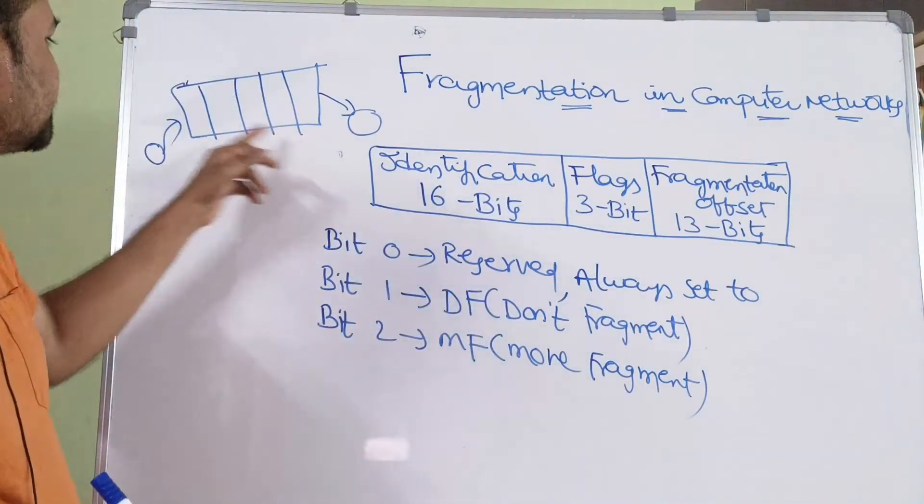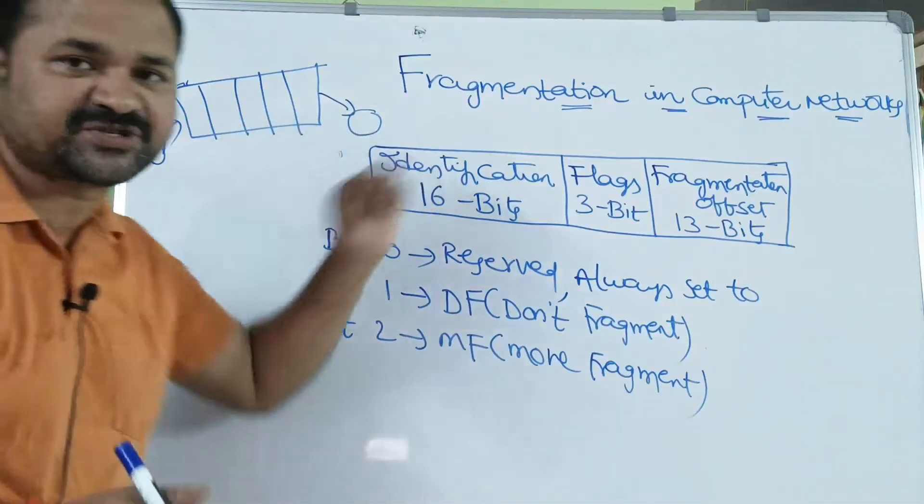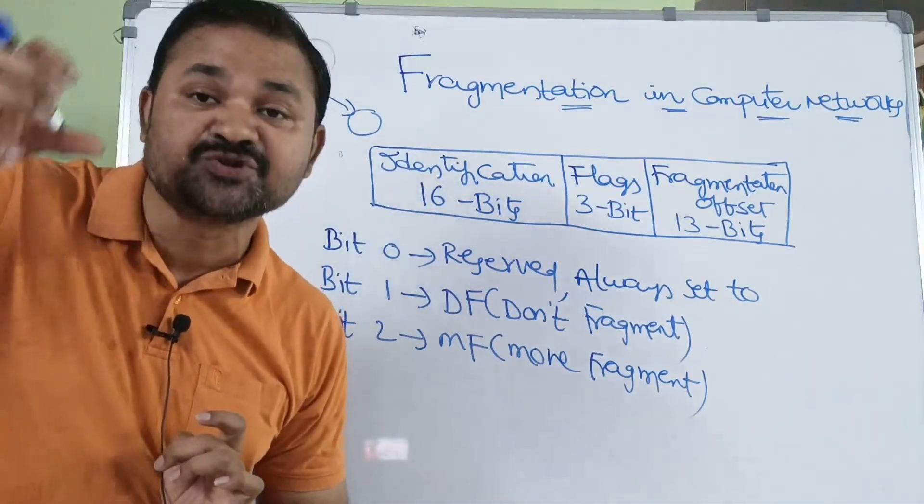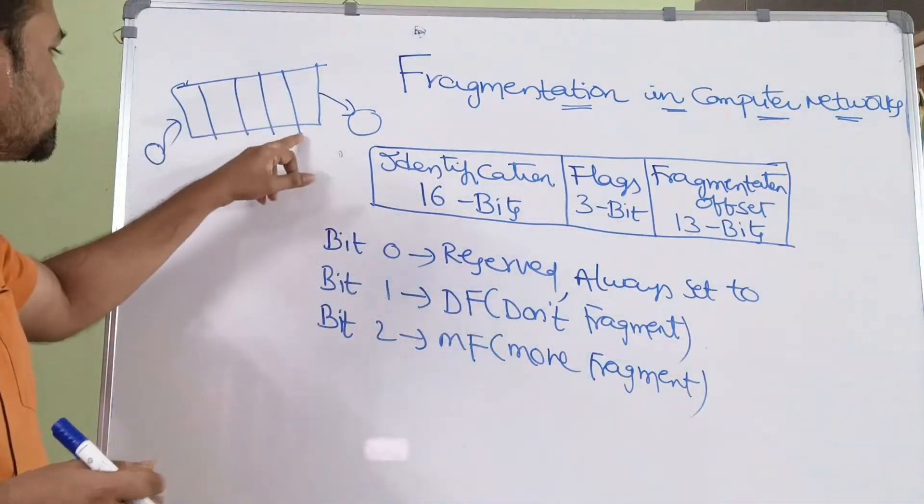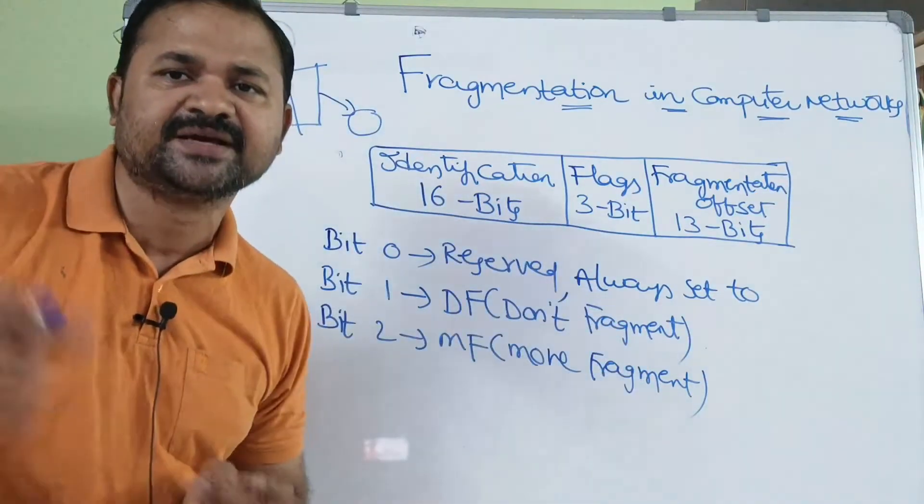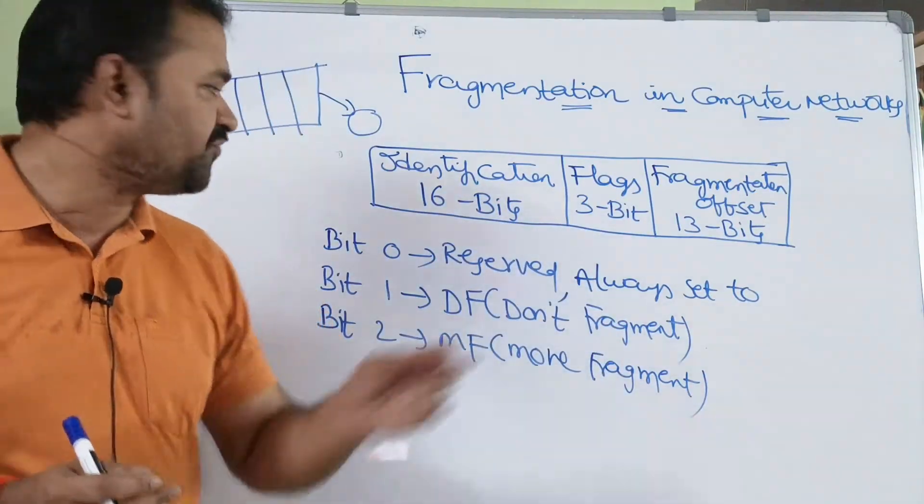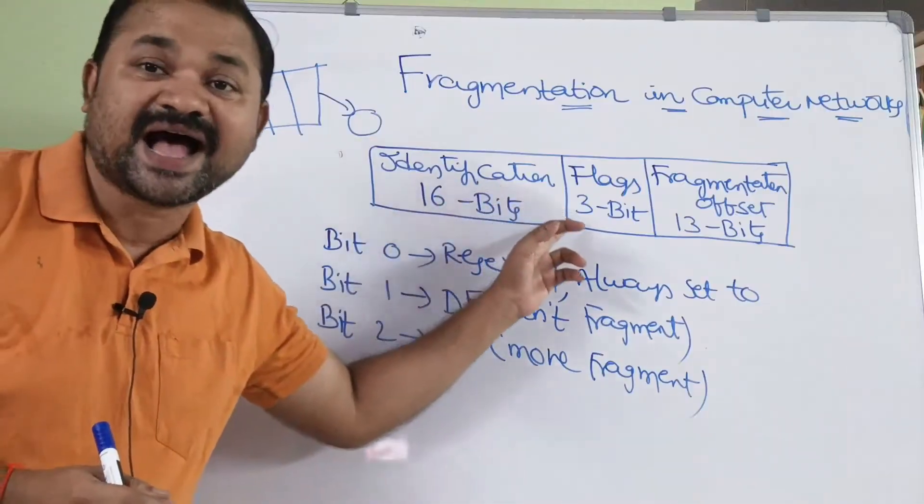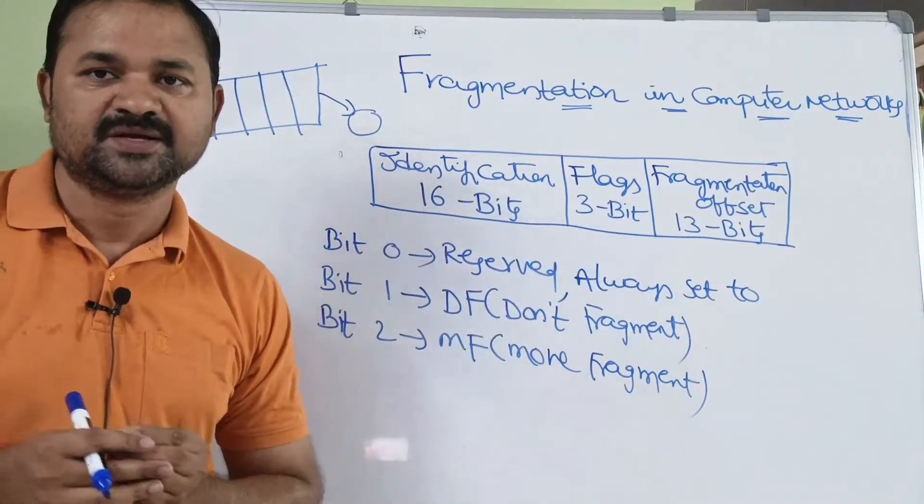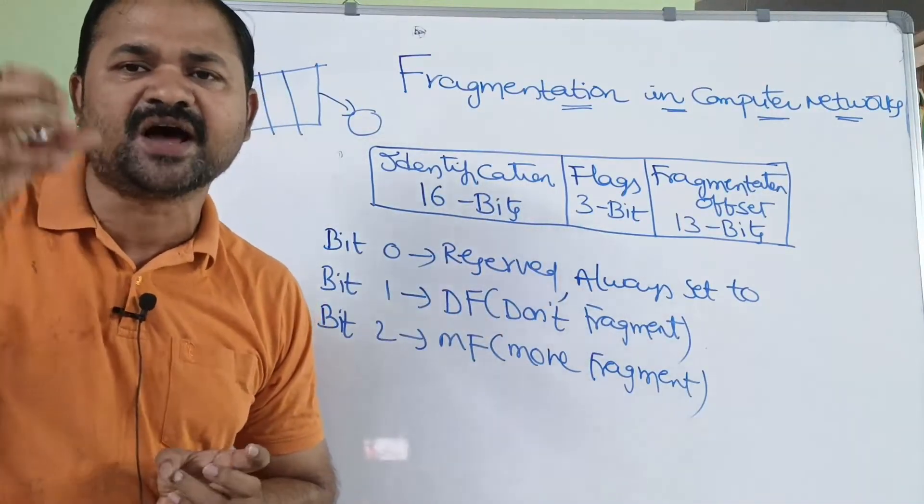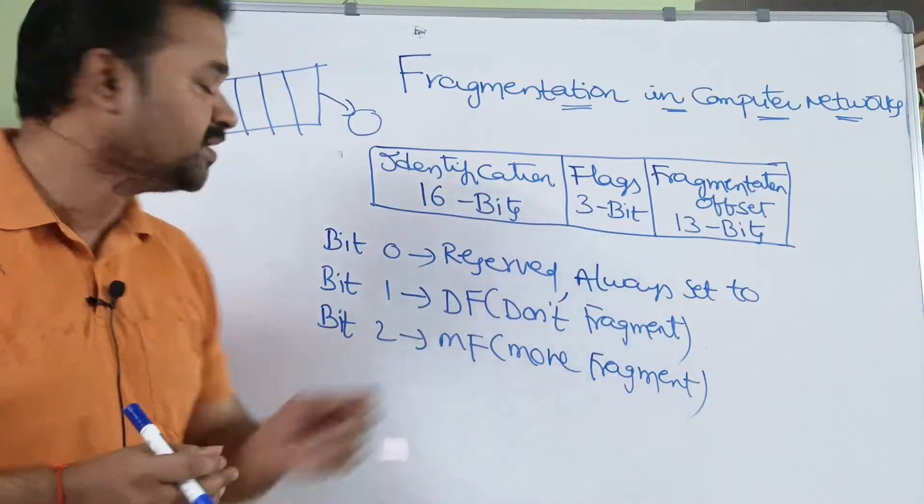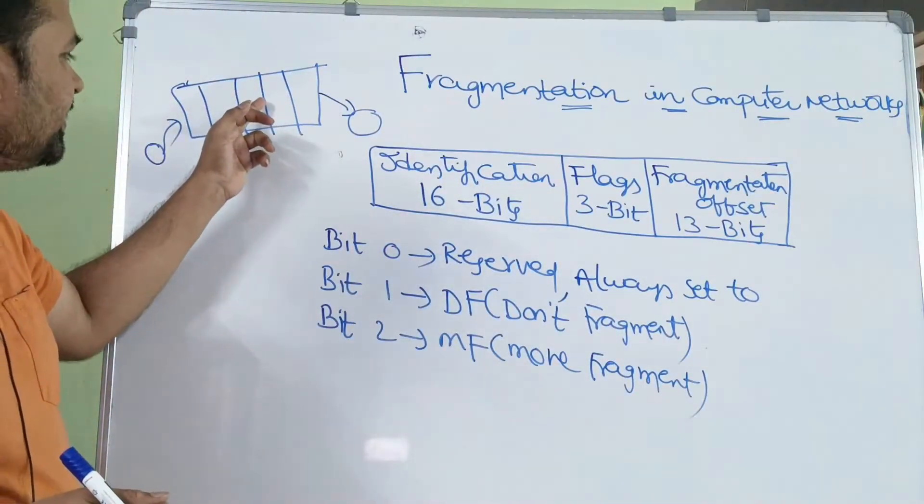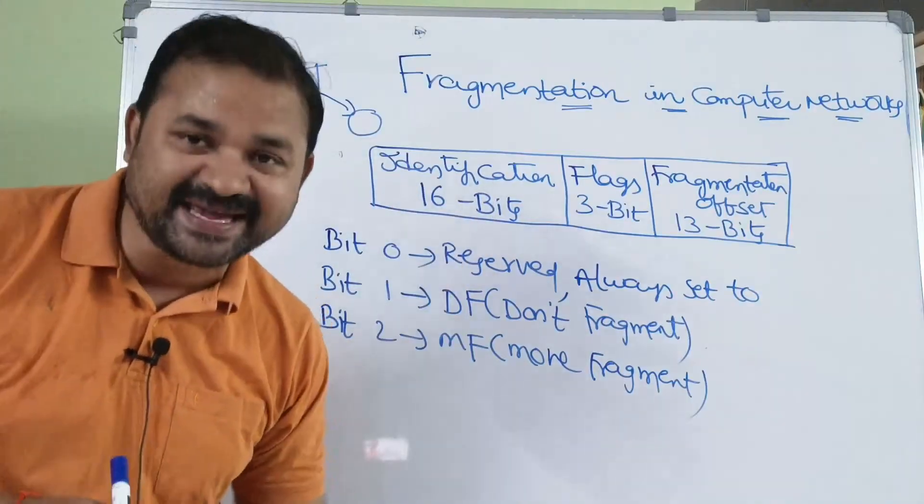Let's say a packet contains five fragments. The destination must know all these five fragments are belonging to a single packet. So for that purpose, it uses the identification field. It is useful to identify which packet the corresponding fragment is belonging to.